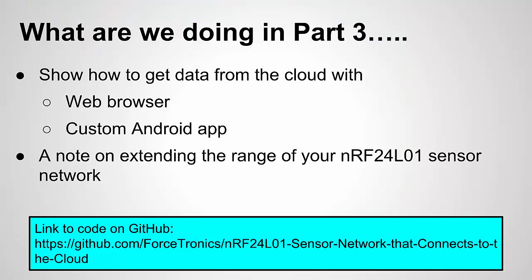What are we doing in part three? We're going to look at how to grab the data from the cloud, starting with some simple examples using a web browser, then we'll look at a custom Android app. The Android app is just meant to be an example — it's not meant to be a finished polished app, more of a foundational example for you to build on and customize for your own purposes. I'm also going to mention a note on how to extend the range of the sensor network.